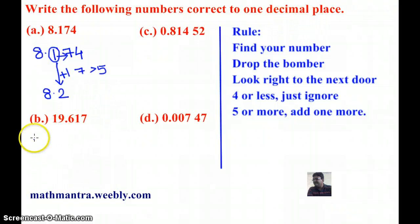Let's take the second example, 19.617. So my number is 6 and the next door number is 1. Now 1 is less than 4. So according to the rule, I'm just going to ignore it and make no changes. In this case, I just write the number as it is, 19.6. Note again that the answer has only one digit after the decimal and the remaining numbers are ignored.